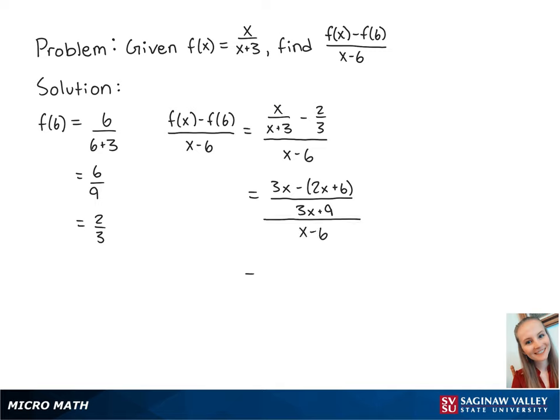If we simplify the top, we get x minus 6 over 3x plus 9. We can also multiply by the reciprocal of the denominator.